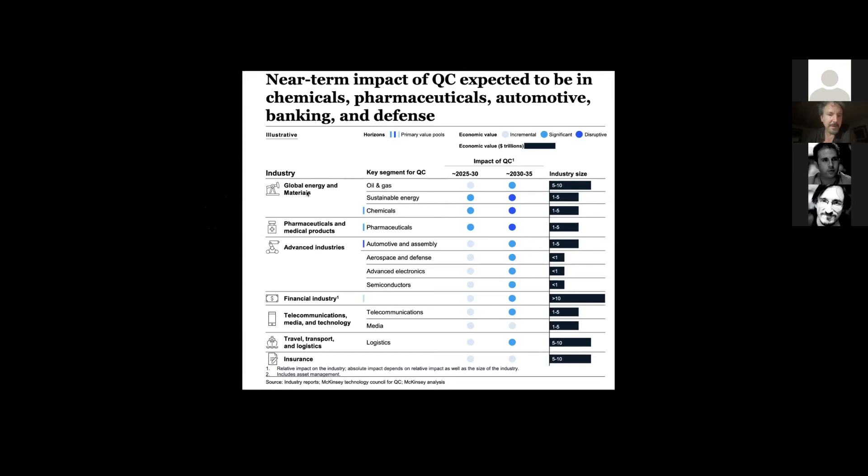Let me just go to the slide I was on previously. This was the near-term impact of quantum computing in various sectors of the economy. This is from the McKinsey report released a couple months ago. Notice that there's the potential for disruptive impacts in the global energy and materials sector, which I think could be relevant to Pakistan. But also these advanced industries, which would point to the opportunities for diversifying the economy, semiconductors, advanced electronics and so forth.